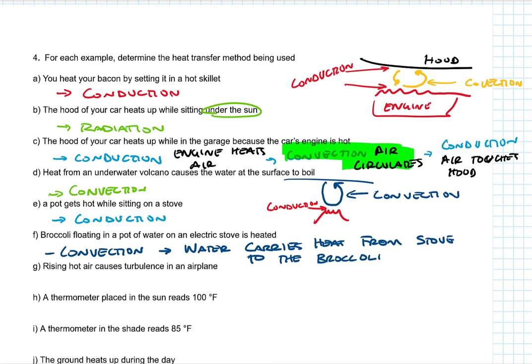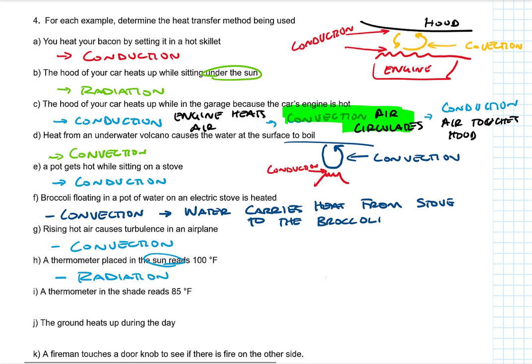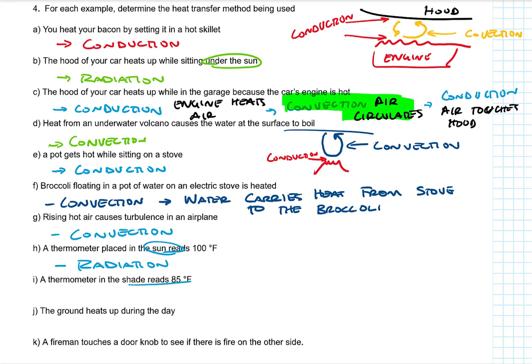Rising hot air causes turbulence in an airplane. That is convection. Talking again about that fluid movement. Thermometer placed in the sun reads 100 degrees. This is radiation. When the sun is involved, we've got radiation.